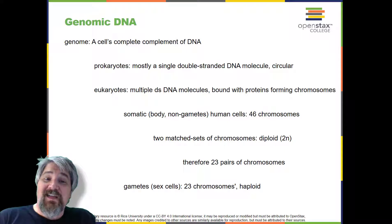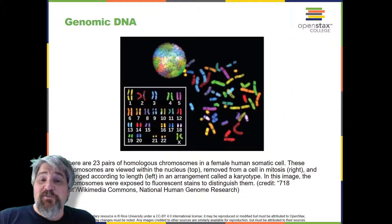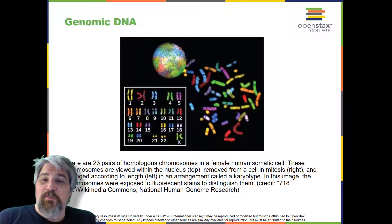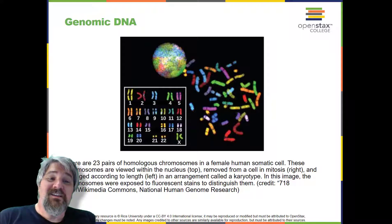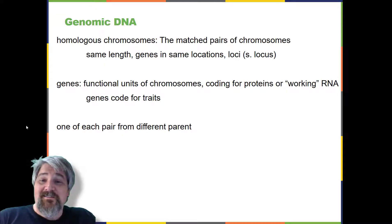Human cells that contain one set of 23 chromosomes are called gametes, or sex cells. These egg and sperm are designated N, or haploid. The matched pairs of chromosomes in a diploid organism are called homologous chromosomes. Homologous chromosomes are the same length and have specific nucleotide segments called genes in exactly the same location, or locus. Genes, the functional units of chromosomes, determine specific characteristics by coding for specific proteins. Genes can also code for RNAs that have enzymatic functionality, such as in ribosomes.